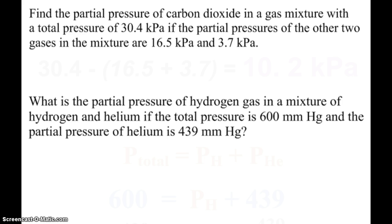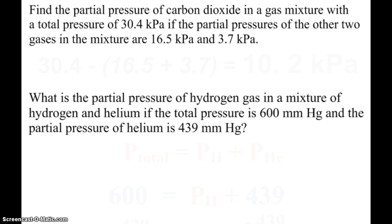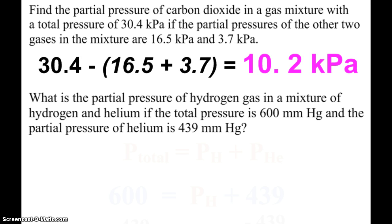If you're given the total and you want to find the pressure of one of the gases in the mixture, so here we have a total pressure of 30.4 kilopascals, two gases in the mixture have those pressures, 16.5 and 3.7. The third gas is carbon dioxide. How would you find that? Total minus the other contributors, and so you see that carbon dioxide must be contributing 10.2 kilopascals of pressure.